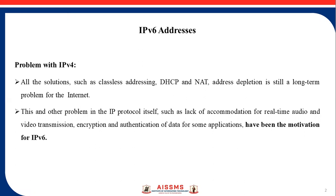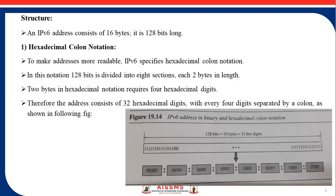Now we will see what are the addressing techniques of IPv6. First of all, we will see the structure of an IPv6 address. Basically, an IPv6 address consists of 16 bytes — it is 128 bits long. In IPv4, addresses are noted in dotted decimal or binary form. This IPv6 address is notated in hexadecimal colon notation. To make the address more readable, IPv6 specifies hexadecimal colon notation.